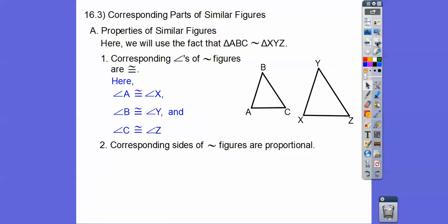Similarly, corresponding sides of similar figures are Proportional. Proportional means you can do a fraction equals a fraction. They're not equal to each other, they're proportional. Proportion means you get a fraction equals a fraction, and we can do that math procedure that's called cross multiplication.